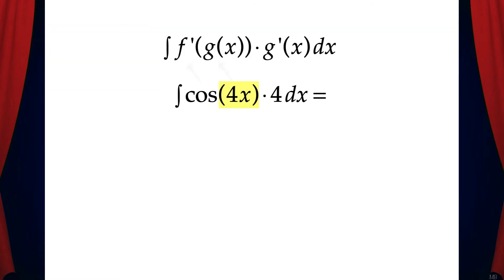So let's let this be the g of x, then we can let the f prime be cosine. And the derivative of 4x is just 4, which we have here in the integral. So g prime of x dx is 4dx.